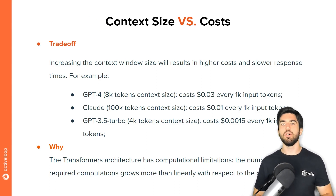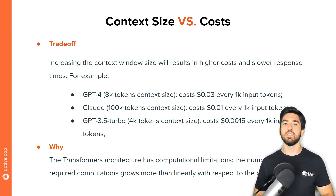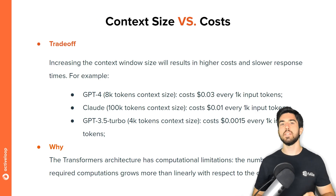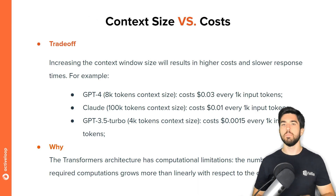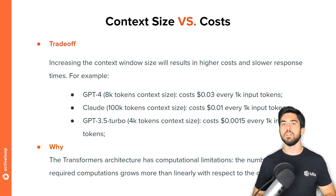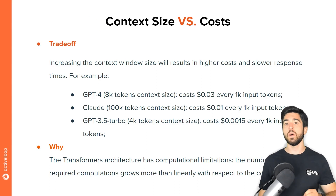OpenAI, for GPT-4 with the 8K context window, currently charges $0.03 per 1,000 tokens for the input prompt and $0.06 per 1,000 tokens for output completions. The latest Claude model by Anthropic with a context size of 100,000 tokens costs approximately $0.01 per 1,000 tokens for input prompts and $0.03 per 1,000 tokens for output completions. Instead, the GPT-3.5 Turbo model used by ChatGPT, using only 4,000 tokens as context, costs $0.0015 per 1,000 tokens for input and $0.002 per 1,000 tokens for output completions, being significantly cheaper.